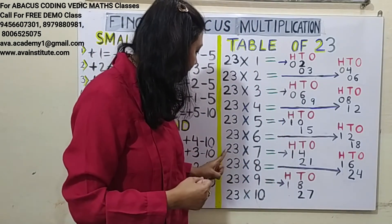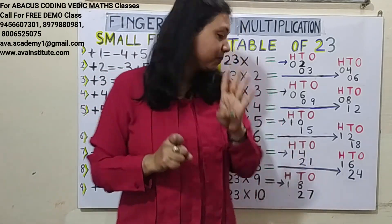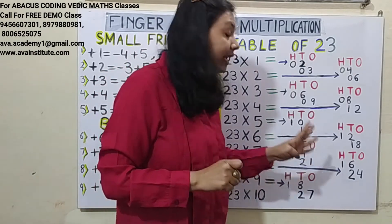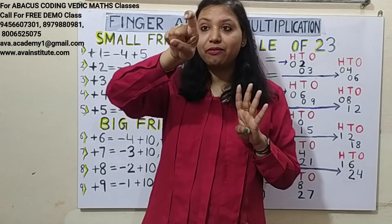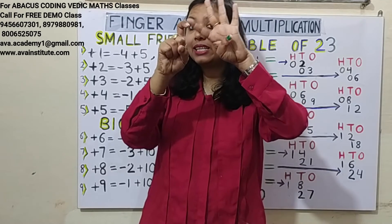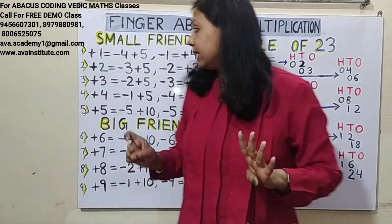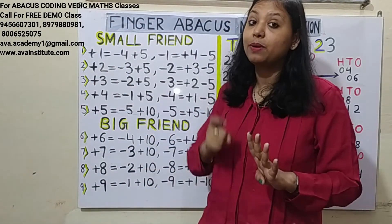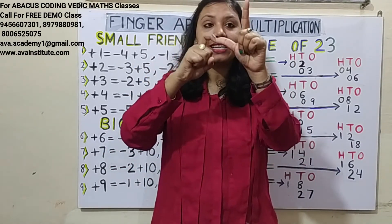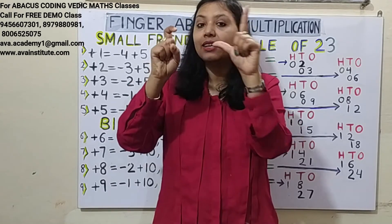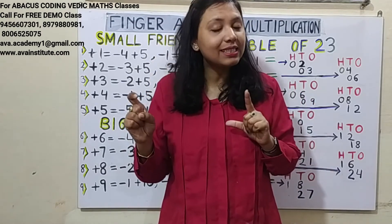23 × 7: 2 × 7 = 14, in 100's: 1, in 10's: 4. 3 × 7 = 21, so add 2 in 10's and 1 in 1's. To add 20, we use the formula: +2 is minus 3 plus 5, so +20 is minus 30 plus 50. 100's = 1, 10's = 60, 1's = 1. Answer is 161.